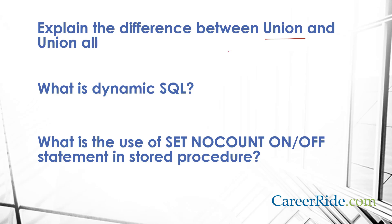Explain the difference between union and union all. Union combines the result set of two or more queries into a single result set. A union statement is like a SELECT DISTINCT on the result set. In union, the number of columns and sequence of columns must be the same in all queries and the data types must be compatible. Union all is very similar to union except it includes duplicate rows in the result set.